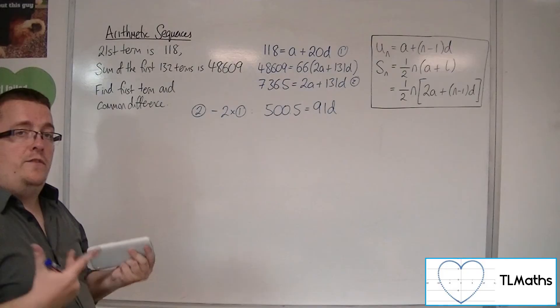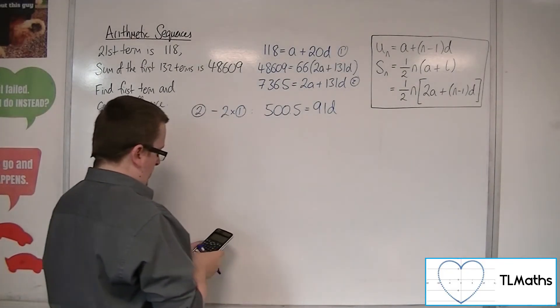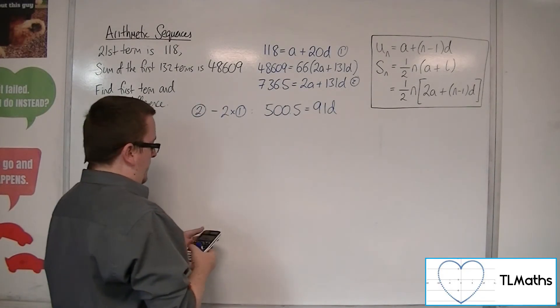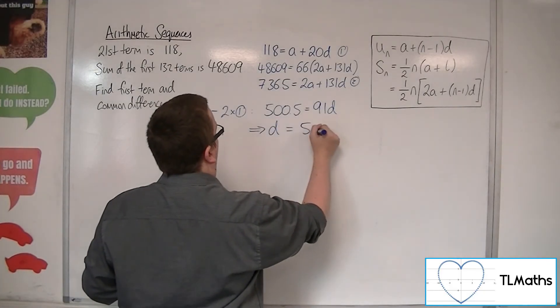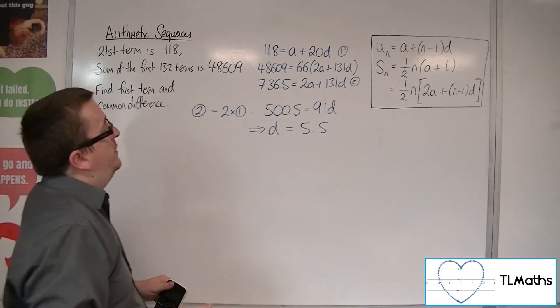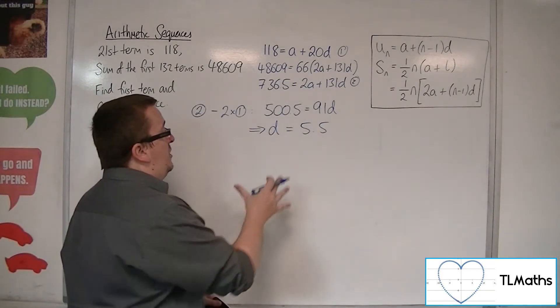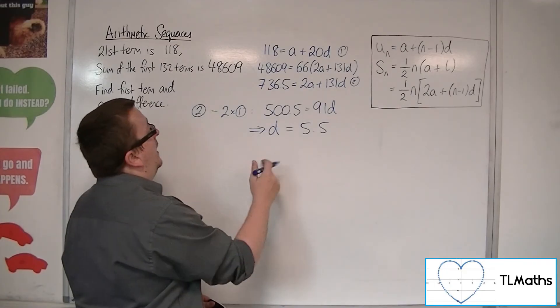So then 500.5 divided by 91 is 5.5. So there's my common difference. So I can now substitute that into one of the two original equations to find A.